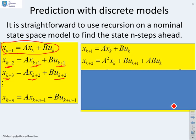Now what I'm going to do next is use these to find a different form of prediction. I'm going to take the prediction for xk plus 1 and put it into this expression here. If I do that, I find that the two-step-ahead prediction is given as a squared xk plus buk plus 1 plus abuk.